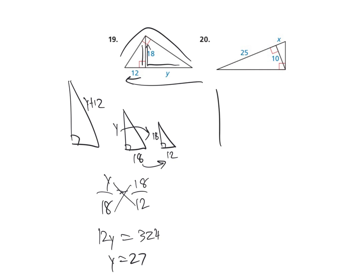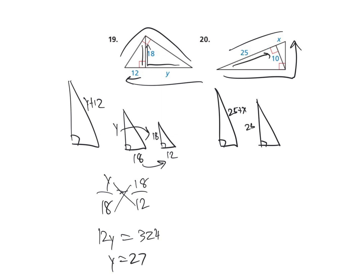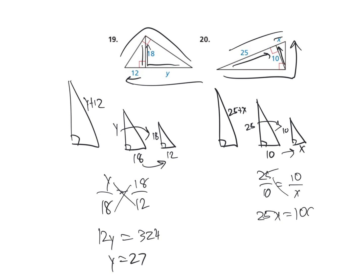Number 20: we don't know the long side or the short side, and the hypotenuse is 25 plus 6, so we're probably not going to use it. The mid-sized triangle: long side is 25, short side is 10. The small triangle: long side is 10, short side is X. So 25 is to 10 as 10 is to X. So 25X equals 100, divided by 25, and X is 4.